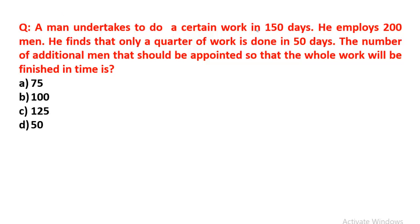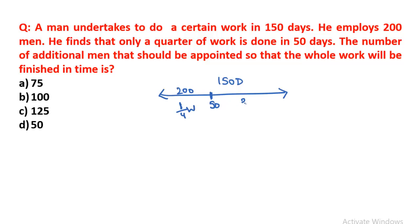Next question: A man undertakes to do a certain piece of work in 150 days. He employs 200 men to complete the work. But after 50 days of work, he finds that only a quarter (one-fourth) of the work is done. So three-fourths of the work remains. The question asks: how many additional men should be appointed so that the whole work is finished on time? Let the additional men be x.